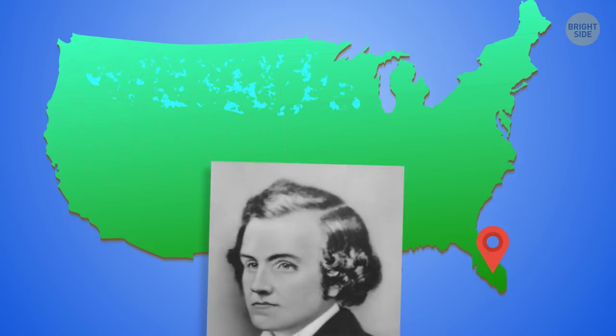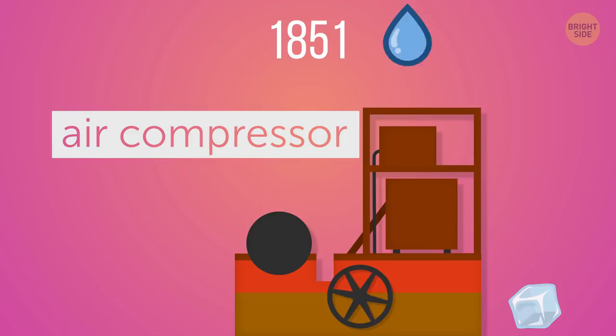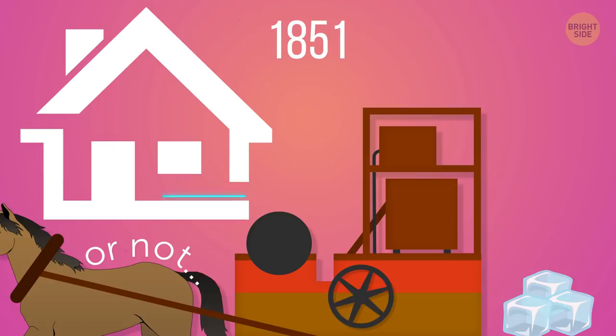By 1851, he designed an air compressor to make ice out of water. The mechanism was powered by a horse. This is how the concept of air conditioning was born.